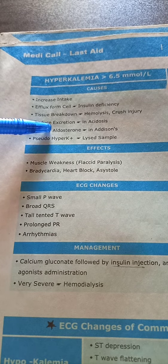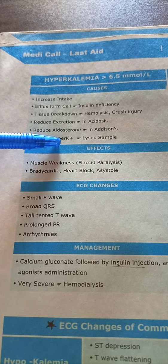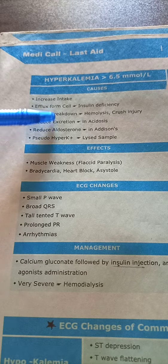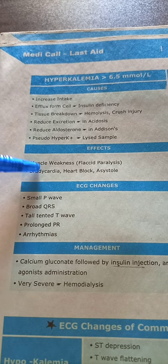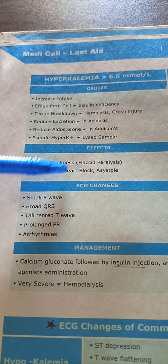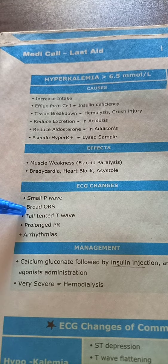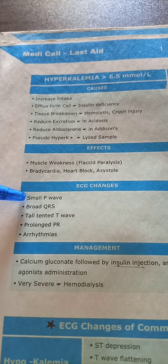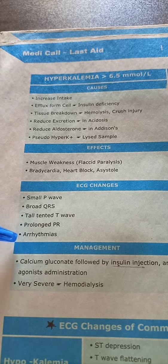Pseudohyperkalemia can result from a lysed sample. Effects include muscle weakness, flaccid paralysis, bradycardia, and heart block. On ECG, the classic findings are tall T waves (high yield), small P waves, broad QRS, prolonged PR interval, and arrhythmias.